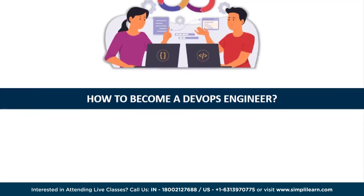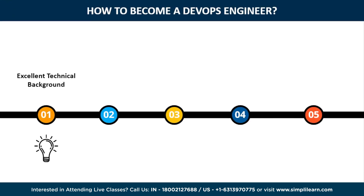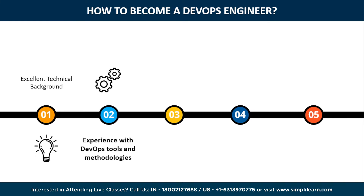But how exactly do you become a DevOps engineer? Depending on the business and the individual function, different criteria may exist. However, some fundamental skills and certifications are frequently needed. First is an excellent technical background — DevOps engineers should be well-versed in IT operations, system administration, and software development. Second is experience with various DevOps technologies and processes, including version control systems, build and deployment automation, containerization, cloud computing, and monitoring and logging tools. Third is scripting and automation skills, including proficiency in tools such as Bash, Python, or PowerShell to automate tasks and processes.